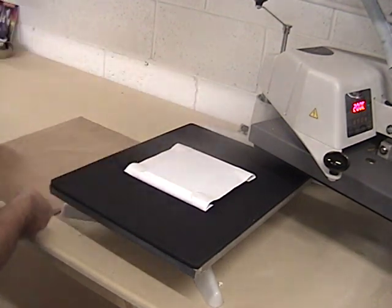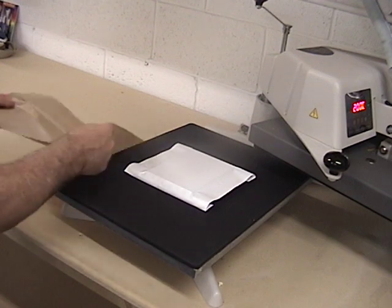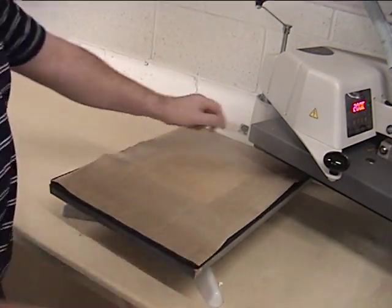Place the plaque face up with the paper on top in the centre of the heat press. Cover with a teflon sheet.